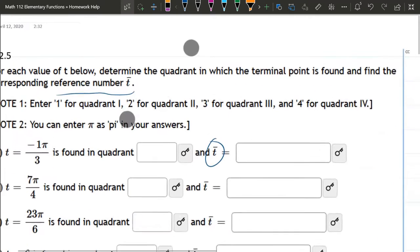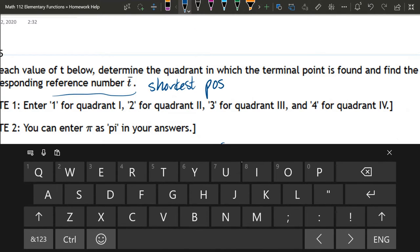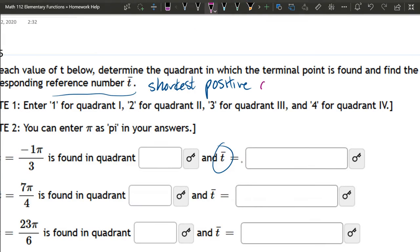One easy way to think about the reference angle or reference number is the shortest or smallest positive angle back to the x-axis.